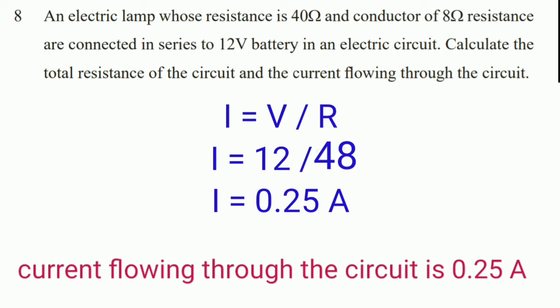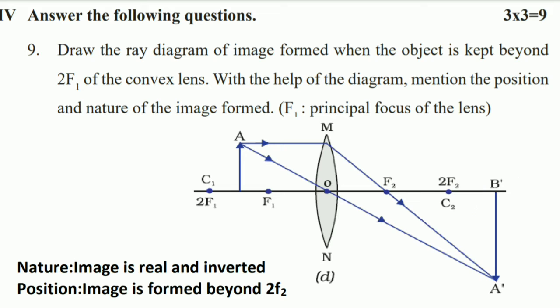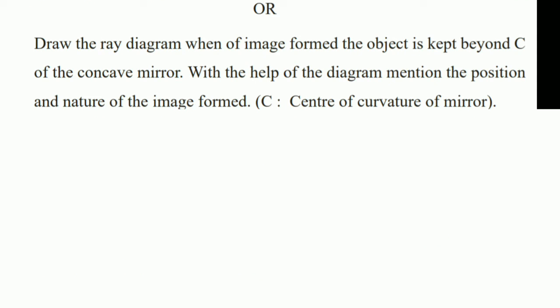Next three-mark question: draw the ray diagram of the image formed when an object is kept beyond 2F1 of a convex lens. With the help of the diagram, mention the position and nature of the image. F1 is the principal focus of the lens. The image formed is real and inverted, and it is formed beyond 2F2, as you can observe here.